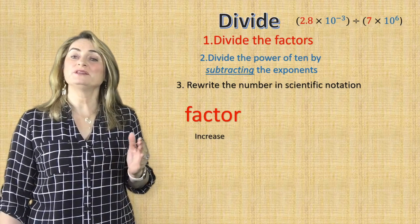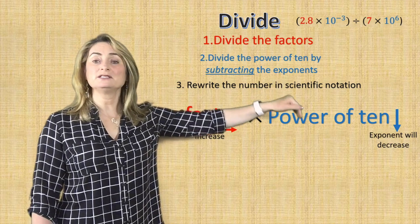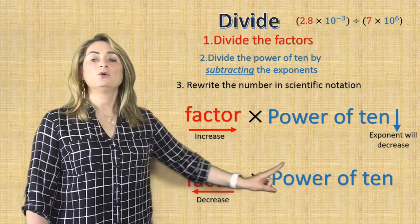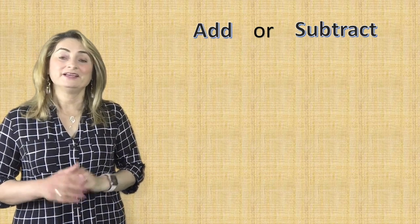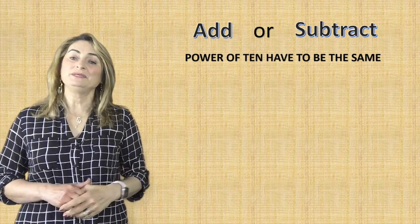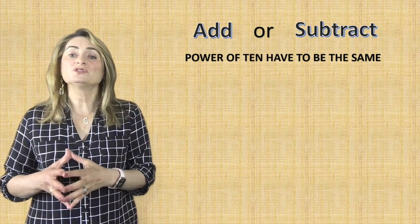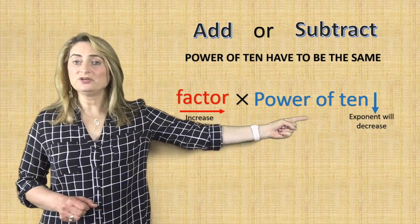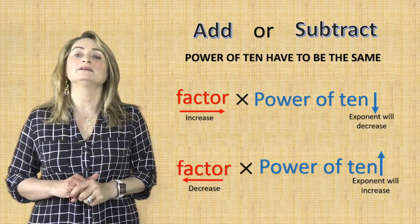Remember, the relationship between the factor and the power of 10 are the opposite. If you are trying to increase the factor, then the power of 10 has to decrease, so the exponent will decrease. Now what do you do if you are adding or subtracting scientific notation? It's completely different than multiplying or dividing. The power of 10 has to be the same, which means I need to change the power of 10 if it isn't the same for both numbers. Use the same rule: if the factor increases, the power of 10 has to decrease; if the factor decreases, the power of 10 will increase — there's an opposite relationship between the factor and the power of 10.